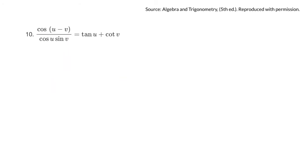Another one: cos(u minus v) over (cos u · sin v) equals cot v plus tan v. I don't even know what to do with this one at first. Let's try the left side. Cos(u minus v) — that's an identity. So that's the same as cos u · cos v plus sin u · sin v, all over cos u · sin v. On the top I can't factor anything out — they're all different, so I might have to leave it like that.